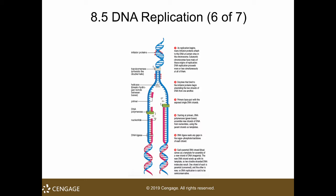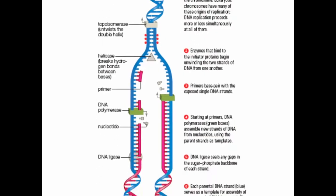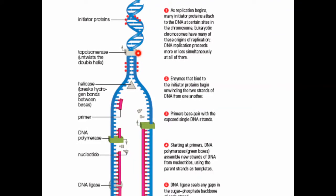Here you can see the steps in replication. You have initiator proteins that tell you where to start the replication — this is your replication bubble. This is your DNA strand downstream site. Topoisomerase helps untwist your double helix. Once it's untwisted, helicases break the hydrogen bonds between the bases. Once they are separated, your primers can hybridize to the open bases and your polymerase can add to the growing strands.